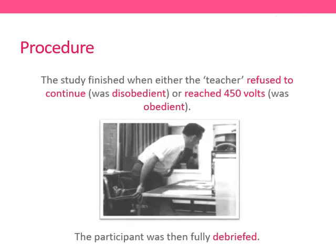The study finished either when the teacher refused to continue — going through the four prods and still saying no — or when they reached 450 volts and had been obedient to the end, with no voltage increments left. Participants were fully debriefed at the end: told the true aims, the learner came out to show they were unharmed and okay. But imagine how you would feel thinking you'd just killed somebody and then being told he's alive and fine. Think about the ethics of that.